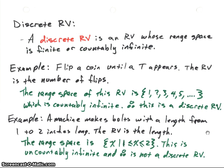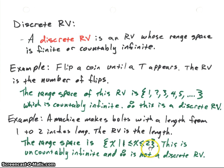Now let's look at another example. Suppose we have a machine that makes bolts, and the length of the bolts can be anywhere from 1 inch to 2 inches long. If we can measure to infinite precision, the range space is any value x such that x is between 1 and 2. Since it can be any value in that interval, this random variable is uncountable — it's a continuous range from 1 to 2. Therefore, this is not a discrete random variable; we'll find out later this is a continuous random variable, which we'll deal with in other videos.